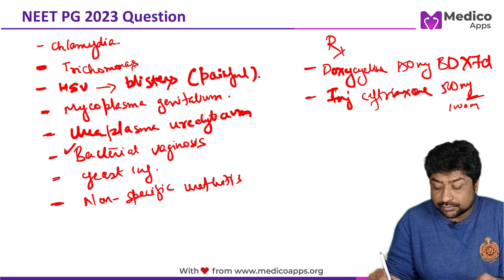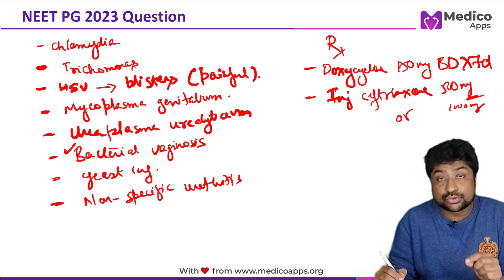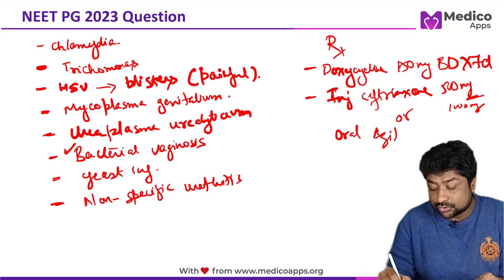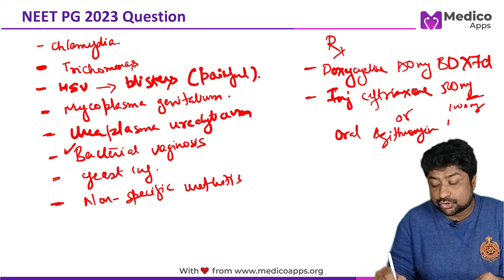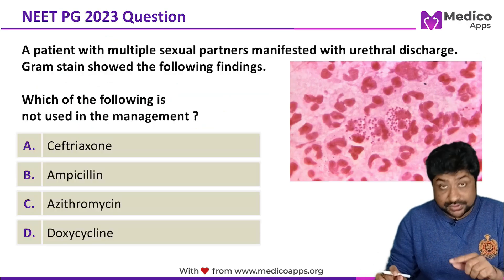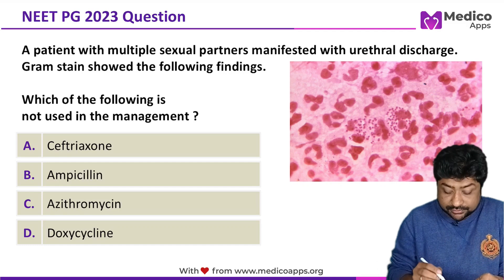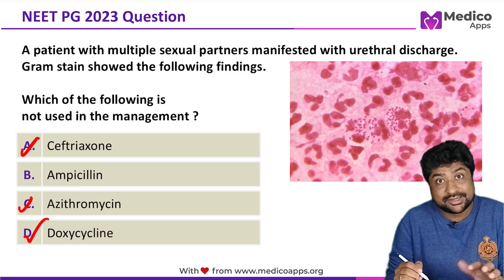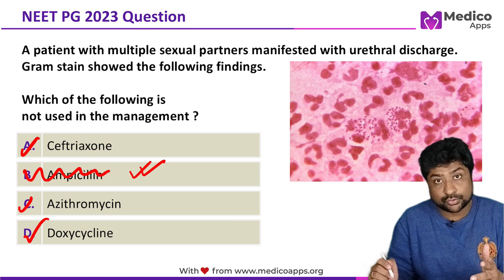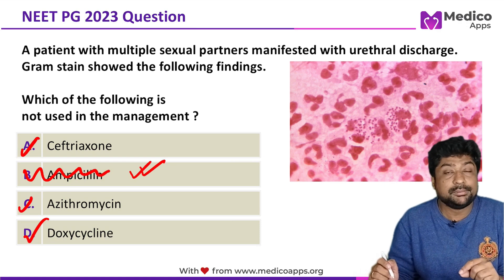Injection ceftriaxone can be substituted with oral azithromycin, given at a dose of 1 gram (1000 mg) as a single dose. So the management involves doxycycline, ceftriaxone, and azithromycin — all three can be used. However, ampicillin is NOT used in the management of gonorrhea. Therefore, the correct answer is option B: ampicillin.